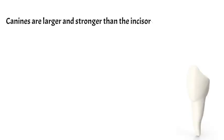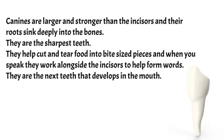Canines are larger and stronger than the incisors, and their roots sink deeply into the bones. They are the sharpest teeth. They help cut and tear food into bite-sized pieces, and when you speak, they work alongside the incisors to help form words. They are the next teeth that develop in the mouth.